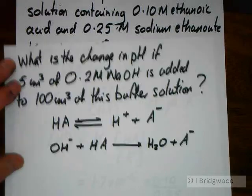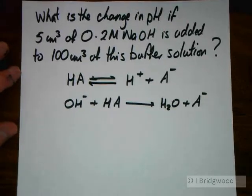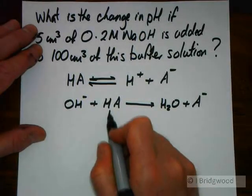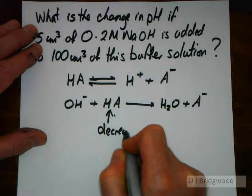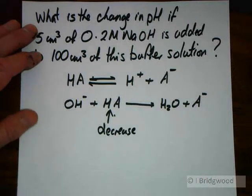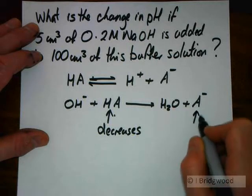And notice what happens in this particular case. Notice what happens in this. That decreases. Our HA decreases, and our A⁻ increases.